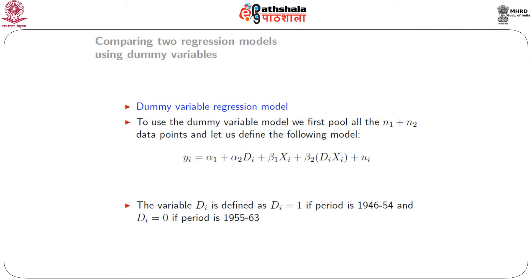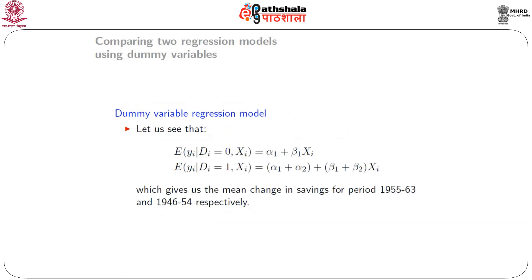Here, Y_i is savings (the dependent variable), X_i is income (the independent variable), and D₁ is a dummy variable that takes the value 1 for the period 1946 to 1954 and 0 for the period 1955 to 1963. When D₁ = 0 (second period), the expected value of Y_i given X_i is α₁ + β₁X_i. When D₁ = 1 (first period), it becomes (α₁ + α₂) + (β₁ + β₂)X_i. These give the mean savings for period 2 and period 1 respectively.